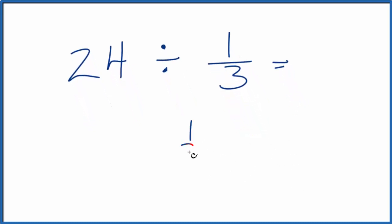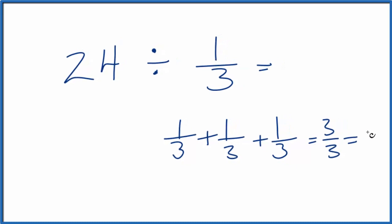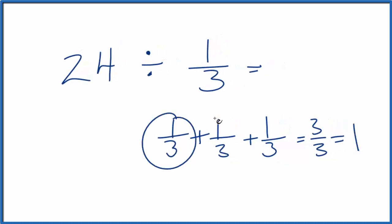If we took 1/3 plus 1/3 plus 1/3, that would equal 3/3, and that equals 1. So for every 1, we have 1, 2, 3 one-thirds.